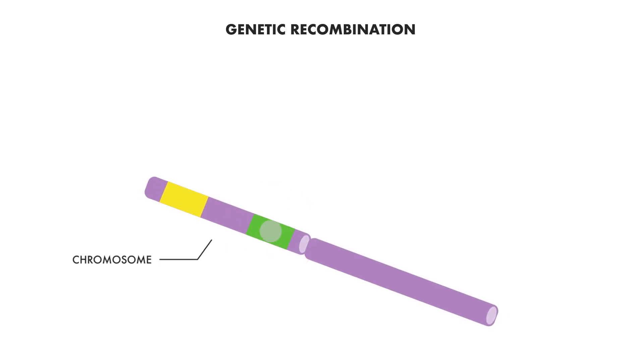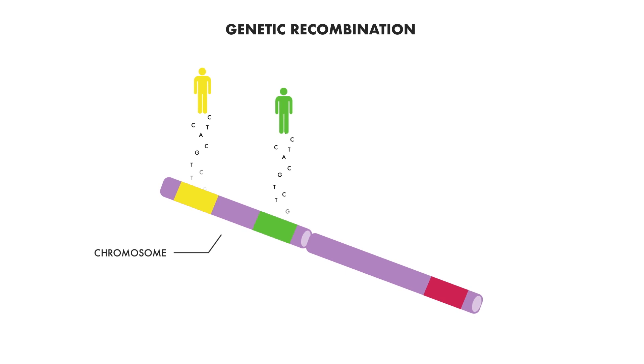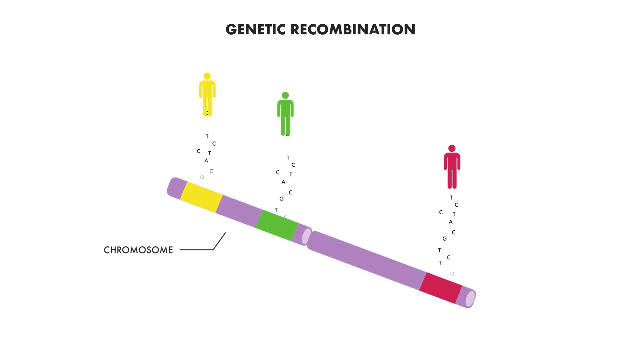Now we can turn to genetic ancestry. Due to the process of genetic recombination, the genome consists of segments, or pieces, of DNA inherited from different ancestors.